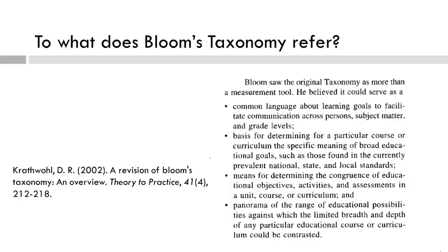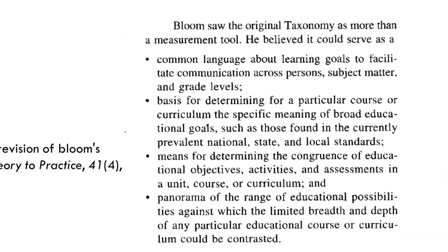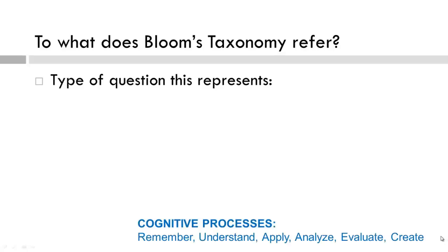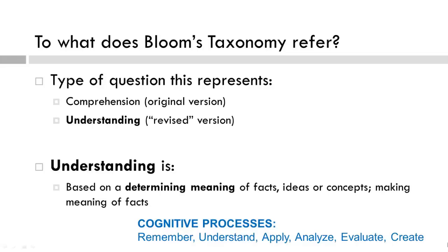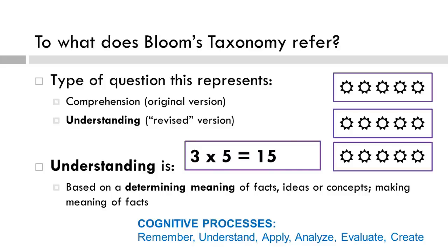To what does Bloom's taxonomy refer? As we discussed earlier, Bloom's taxonomy refers to more than just a way to measure educational objectives. If you have not yet read the Krathwohl paper, please do so now and pause the video to recap what Bloom himself thought might be achieved with the taxonomy. The original taxonomy would categorize this as comprehension, but we will use the revised taxonomy, where this represents understanding — determining the meaning of facts, ideas, or concepts. Understanding is different from remembering that 3 times 5 is 15; to demonstrate understanding means making meaning that 3 times 5 represents 3 groups of 5, with a total of 15.